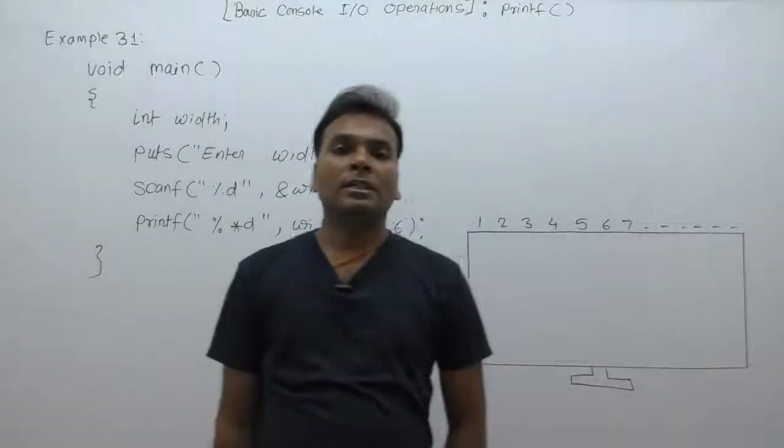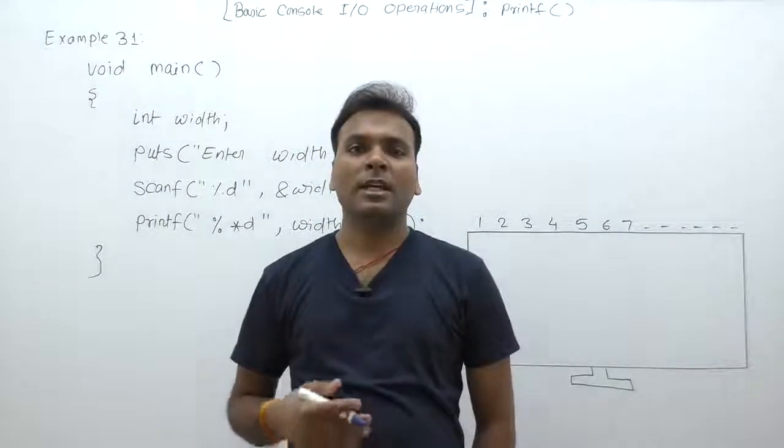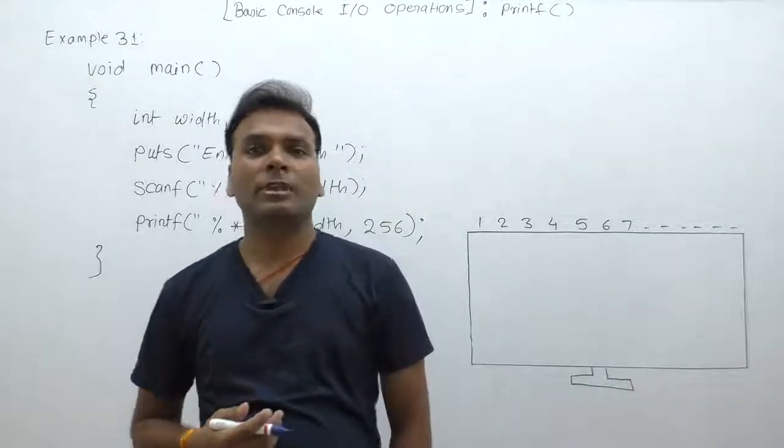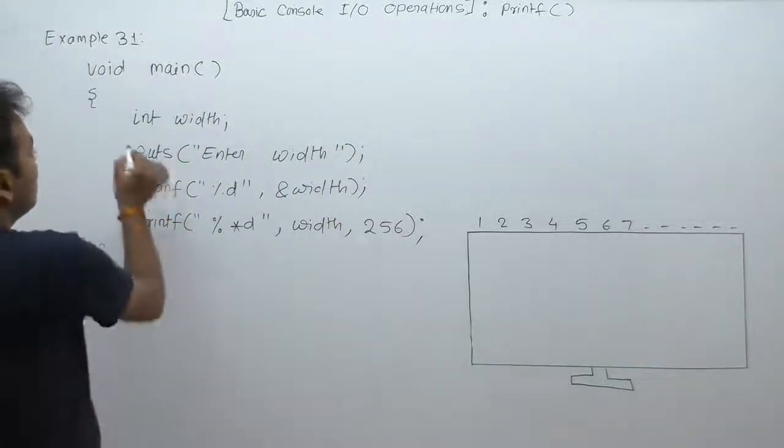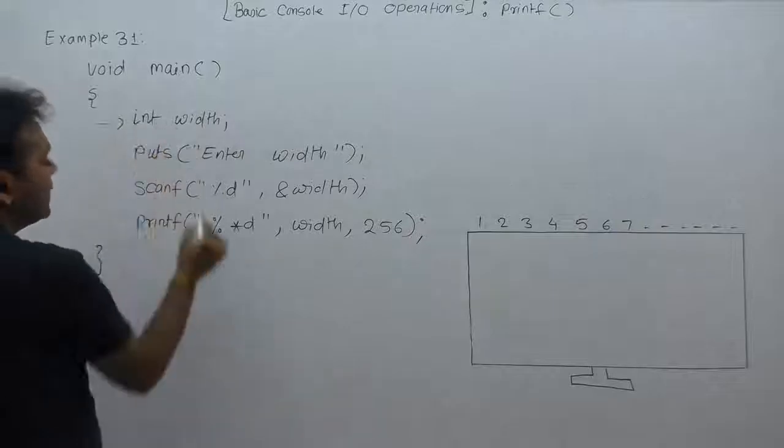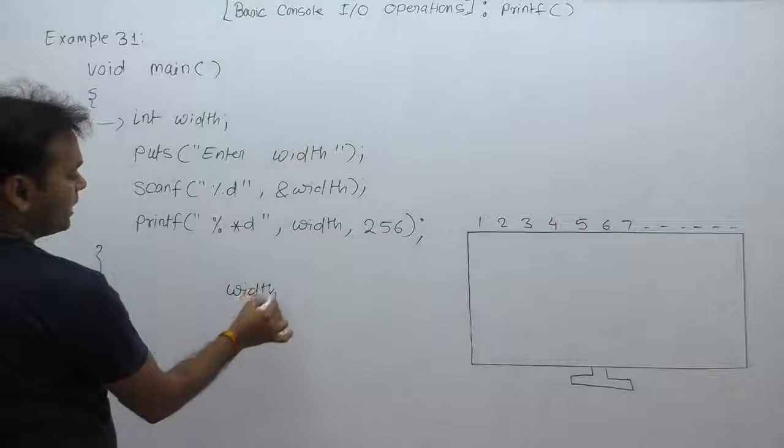Now, next one: we are supplying some dynamic width using the scanf function with the help of an integer type variable. Using the keyboard, first of all we are declaring a variable called width. These are local variables.